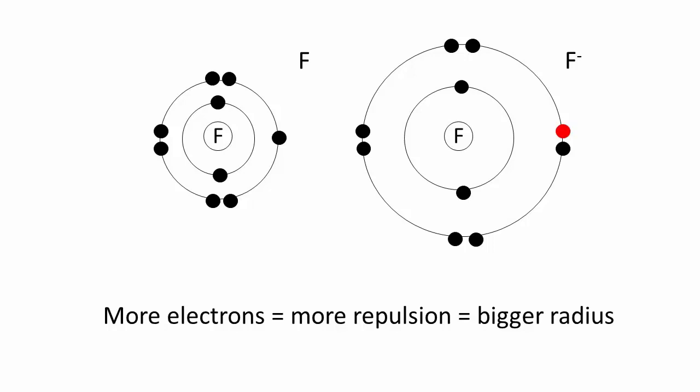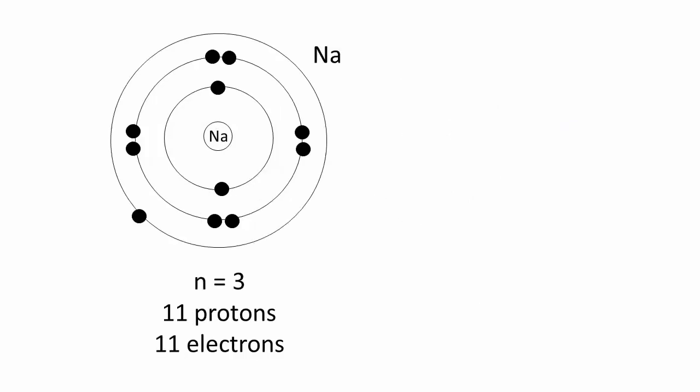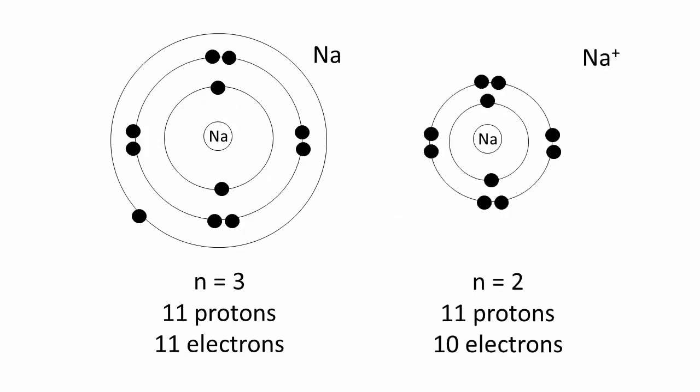When an atom loses electrons to become a cation, it becomes smaller. It can become very much smaller if the atom's valence is emptied and the cation has a new valence one principal quantum number lower. For example, sodium is a relatively big atom with a valence of n equals 3, but the loss of an electron produces a much smaller cation with a valence of n equals 2.